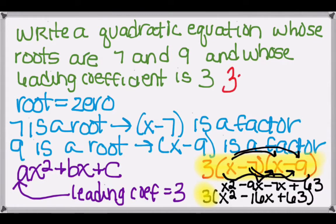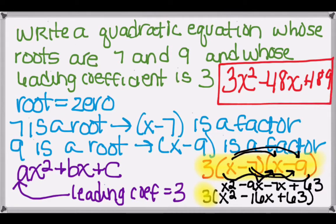And then the last step to finish the multiplying is to multiply everything through by 3, which gives us 3x² and then 3 times negative 16 is negative 48x, and then 3 times 63 is 189.